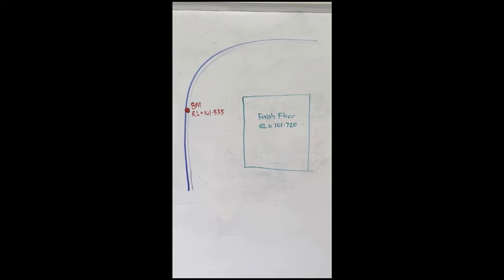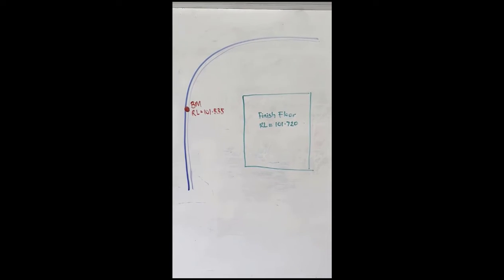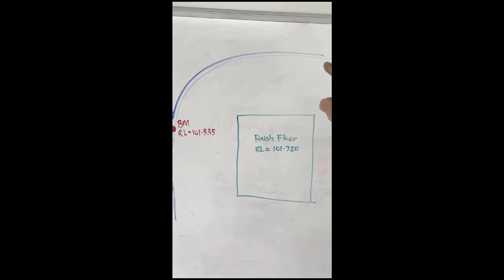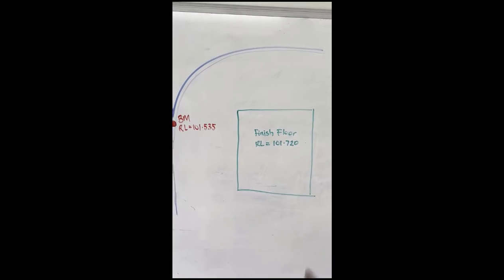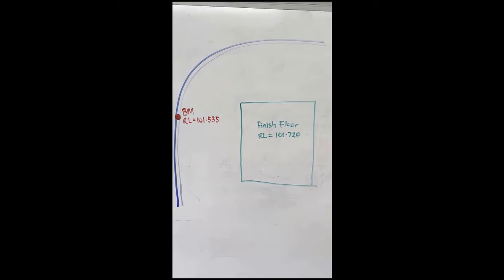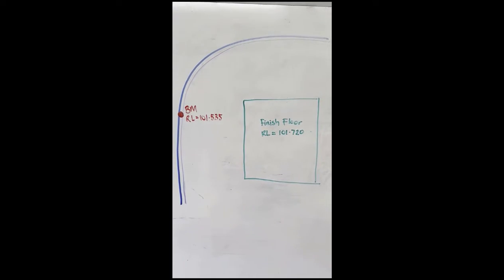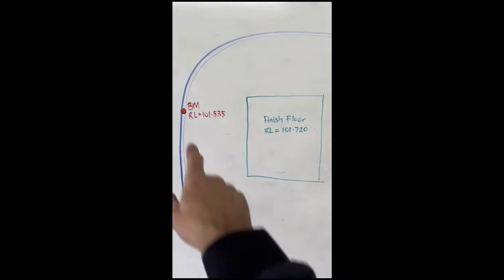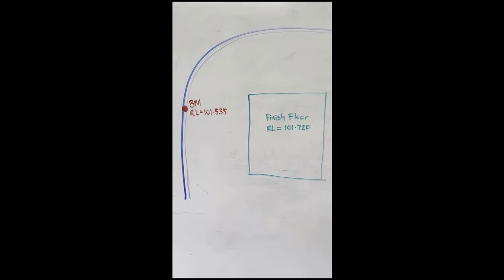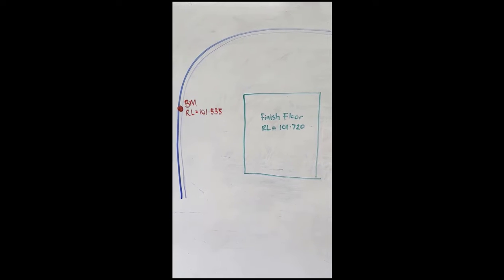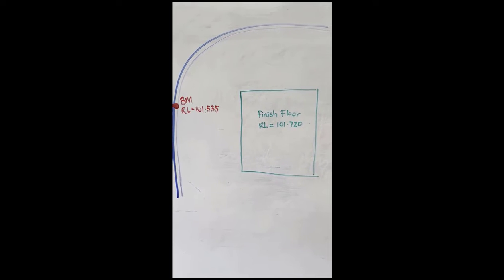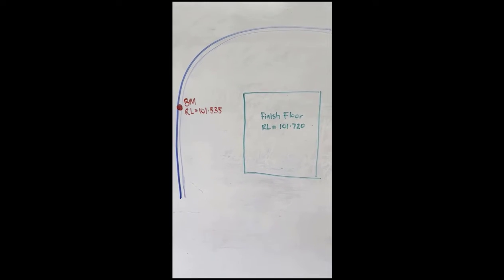Here's the plan of the job being excavated today. There's a kerb line that runs around the outside of the site, and a new building floor pad in the middle — that's going to be concrete. There's a benchmark on the kerb with an elevation on the plan: RL 101.535, and the finished floor height, top of concrete, is RL 101.720.